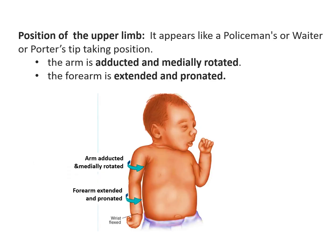Let us now see the position of the upper limb in Erb's paralysis. As can be seen in the picture, the upper limb appears as if a policeman, waiter, or porter is taking a tip. The arm will remain adducted and medially rotated, meaning the movements of abduction and lateral rotation are lost. The forearm is extended and pronated, so flexion and supination of the forearm are lost.